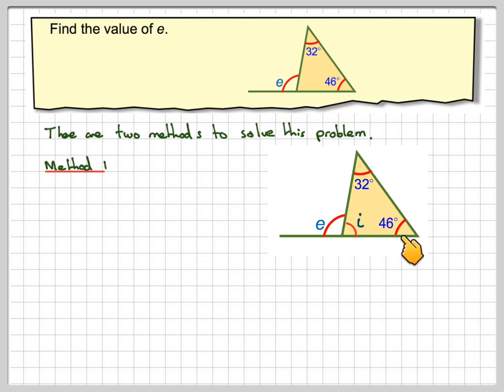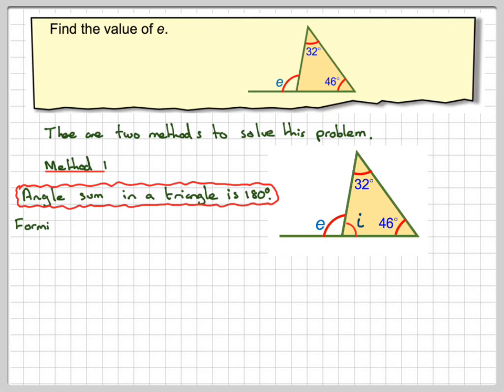Then we know the angle sum of a triangle is 180 degrees. So forming an equation, we have I plus 32 plus 46 is equal to 180. So that gives me I plus 78, which is 32 plus 46, is equal to 180. And then subtracting 78 from both sides of that equation, we get that I is equal to 102.